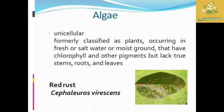After that we are going to see algae. Algae are unicellular organisms mostly classified as plants. They occur in fresh or salt water or moist ground. They have chlorophyll and other pigments but lack stem, root, and leaves.